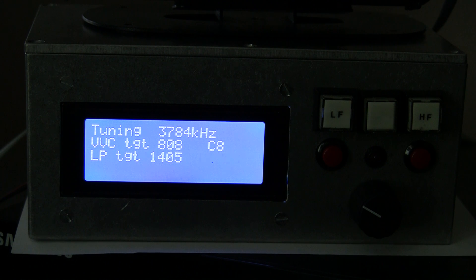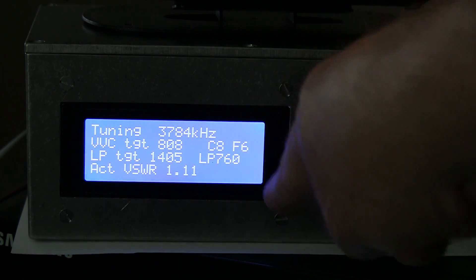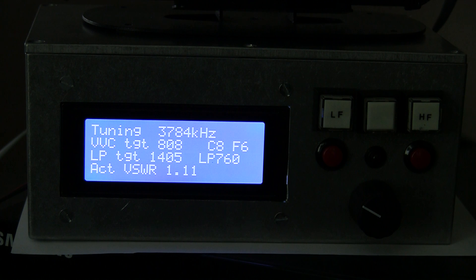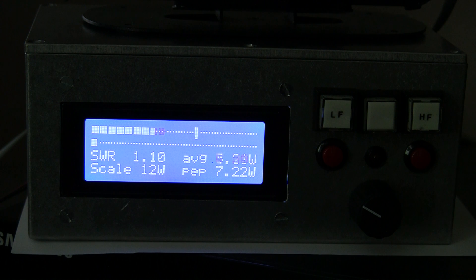It's put the VVC and the loop at 760 and 6. And it's achieved a VSWR of 1.11. And now it drops back into normal power meter mode. So that happened all pretty quickly.